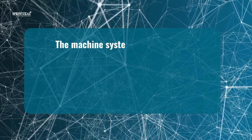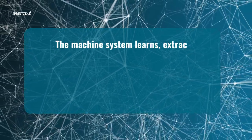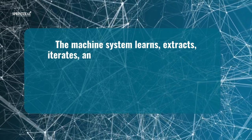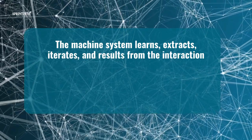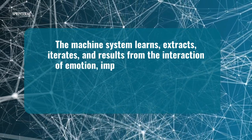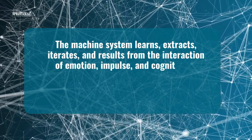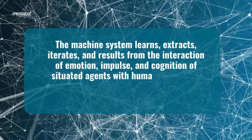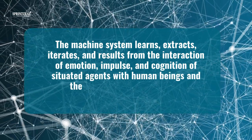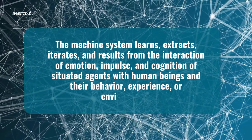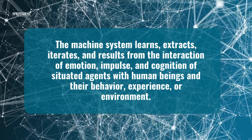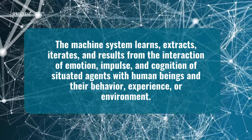The machine system learns, extracts, iterates, and results from the interaction of emotion, impulse, and cognition of situated agents with human beings and their behavior, experience, or environment.